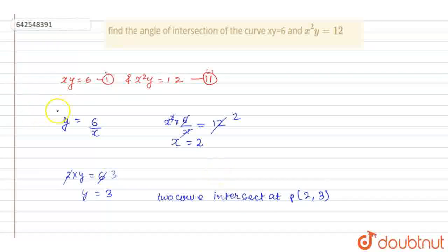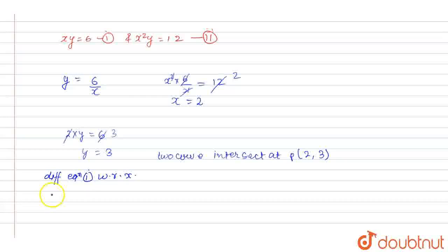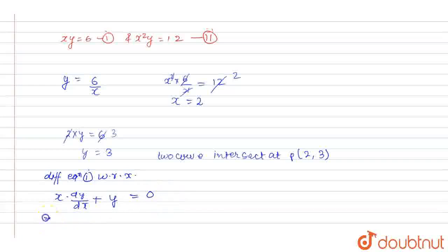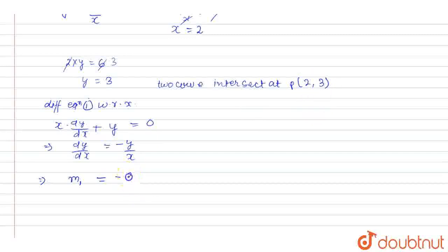Now differentiating equation one, xy = 6, with respect to x: x(dy/dx) + y = 0. From here, dy/dx = −y/x. We put in the point (2, 3), so this is slope m1 = −3/2.